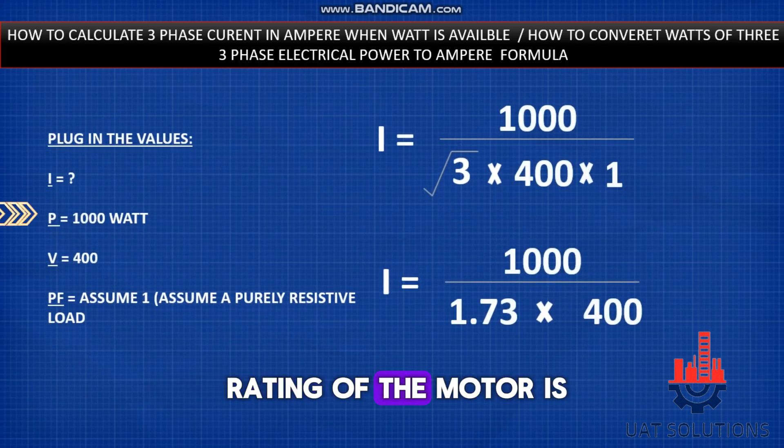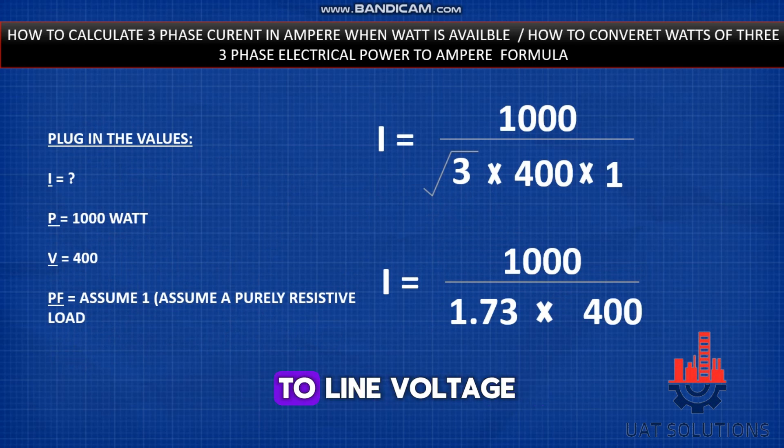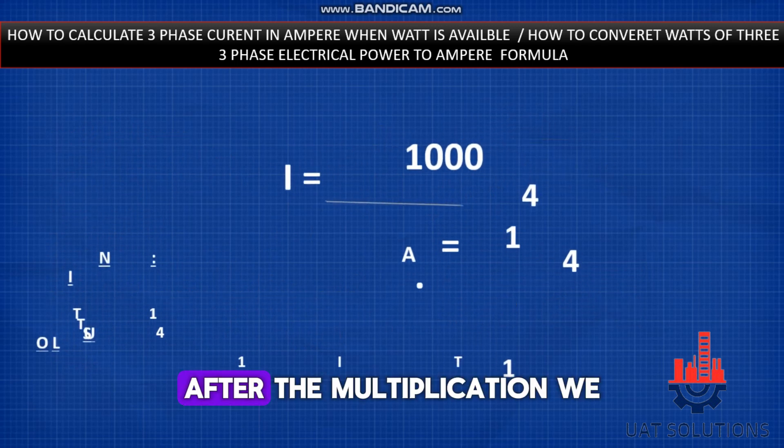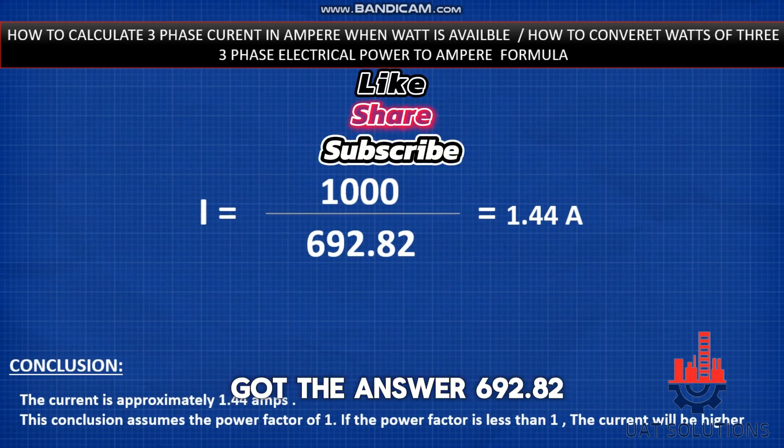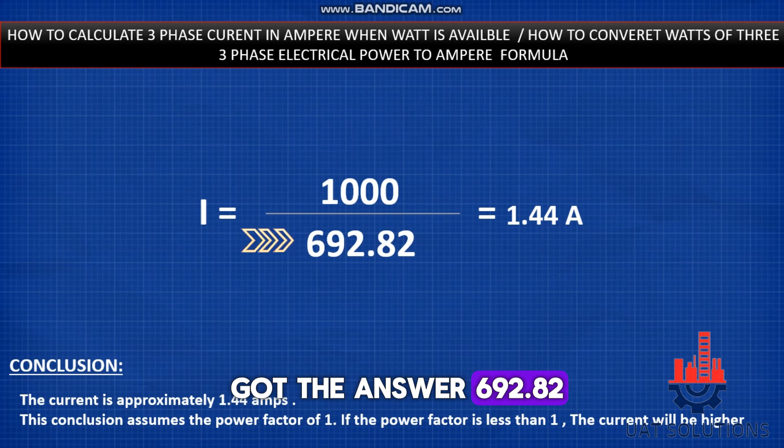Let's assume the power rating of the motor is 1000 watts and line-to-line voltage of 400 volts with a power factor value of 1. The value of √3 is 1.732. After multiplication, we get 692.82.